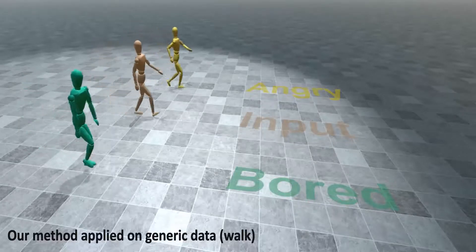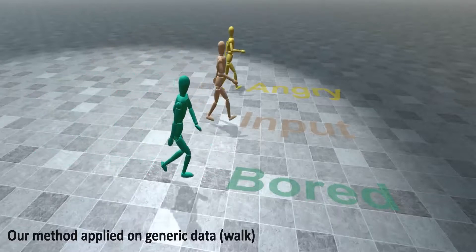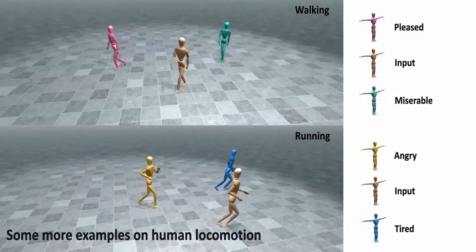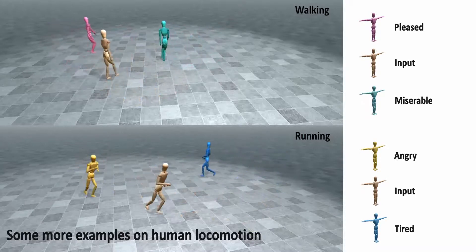We have also applied our method on generic motion tasks that are not dance related. Experiments shown here with walking and running human locomotion demonstrate that our stylizer can be extended beyond dance, still producing reasonable emotional variance of the input motion.